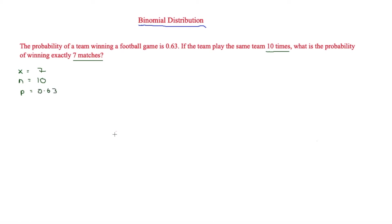Using the calculator with binomial PD — the binomial probability distribution — and entering x = 7, n = 10, p = 0.63, the probability is equal to 0.2394.